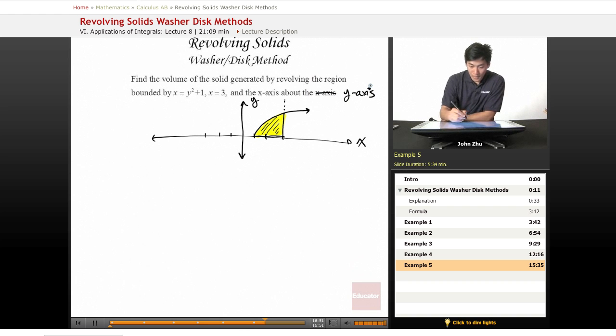So we know that x equals y squared plus 1. So let's try to solve for y. So y equals square root of x minus 1. X equals 3. So where do they intersect?